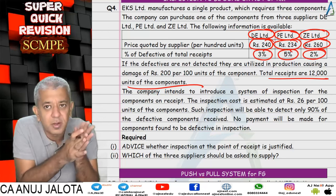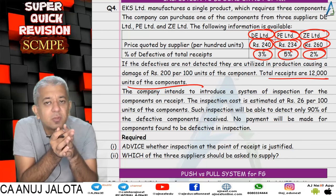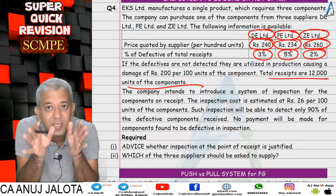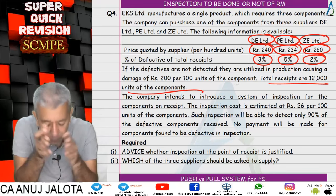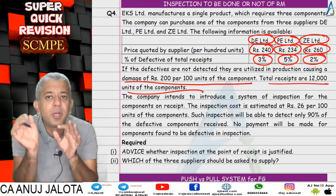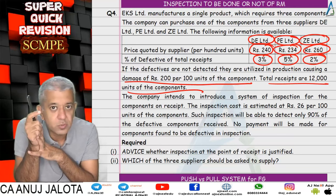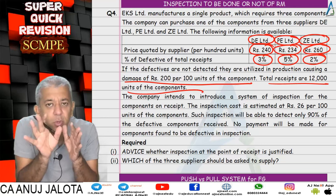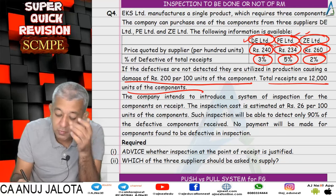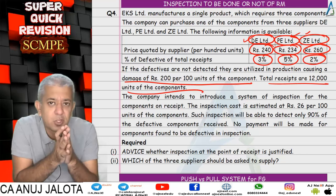This much will be the defective goods. Out of 12,000 units, 3 percent will be defective — so 360 units will be faulty. If these 360 defective units go inside our production, the product gets spoiled, causing damage of rupees 2 per unit of the component. So the damage cost is 360 × 2 = 720 rupees. Total cost = purchase cost + damage cost, divided by the number of good units (11,640), to find cost per good unit.